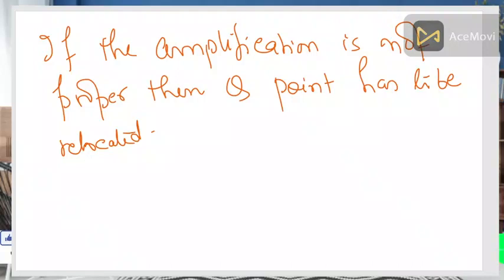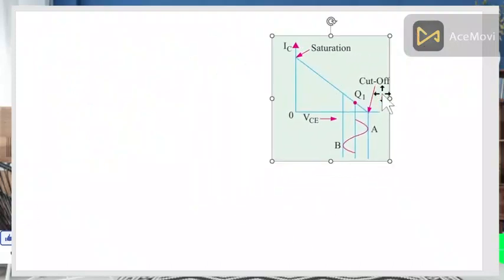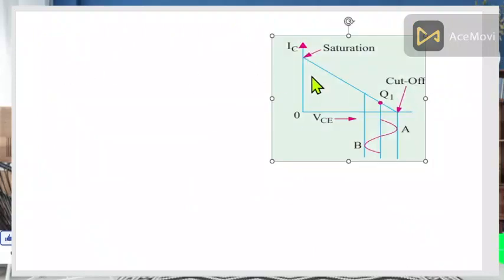The question arises: how to locate the proper operating point? If your operating point is not proper — if the current and voltage values are not correct — then some part of the input signal will be removed or clipped off. This is the main concept. Let us see what a distorted or unfaithful amplification looks like.